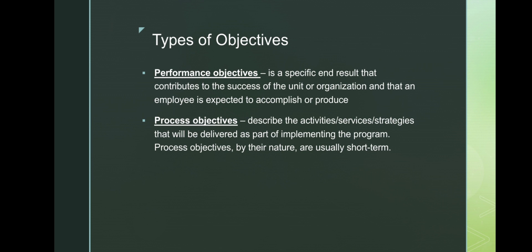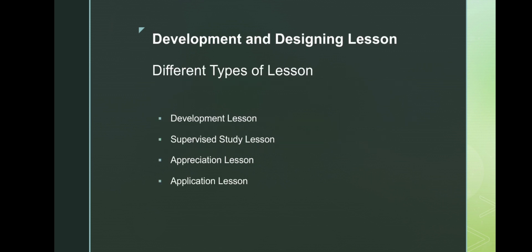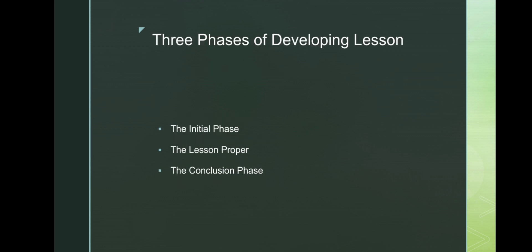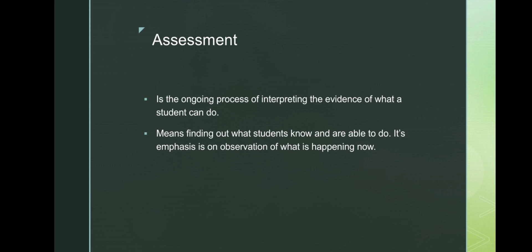For developing and designing a lesson, here are the different types of lesson development: the lesson proper, software advice study lesson, appreciation lesson, and application lesson. There are three pieces of developing a lesson: the initial piece, the lesson proper, and the conclusion piece. Assessment is the ongoing process of interpreting the evidence of what a student can do. It means finding out what students know and are able to do; its emphasis is on observation of what is happening now.